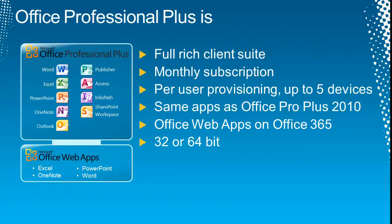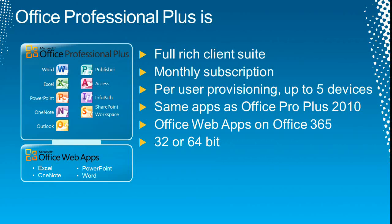Office Professional Plus is a full rich client suite on a monthly subscription model. At the end of every 30 days, your subscription is verified. If everything is good, you continue. If not, you get a grace period to resolve the subscription issue. If you're unable to resolve it, the client goes into a diminished functionality mode — no documents will be removed or deleted, but you will just go into view mode; you cannot save or edit any document if your subscription is invalid. It's per-user provisioning, and you get the choice to install 32-bit or 64-bit.